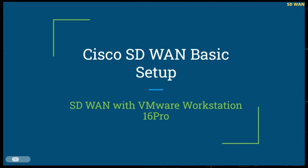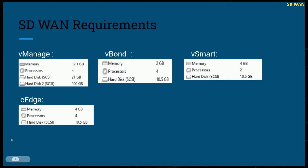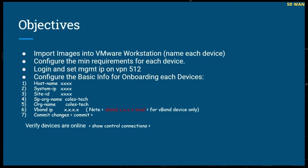Hey guys, welcome back to another video. Today I'm going to be setting up a basic SD-WAN setup in VMware Workstation 16 Pro. We have a few requirements for each device, so take a quick screenshot of what we need. I had this set up previously, so I'm going to basically just rebuild it. We have our objectives so you can look and see everything we're going to be performing.